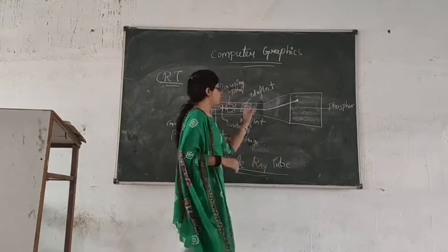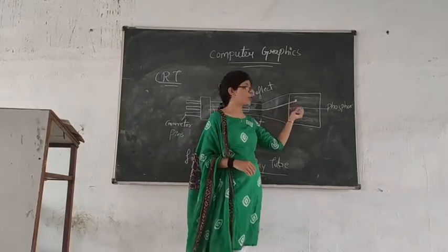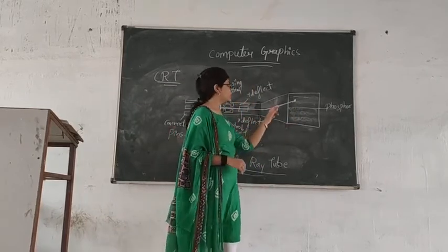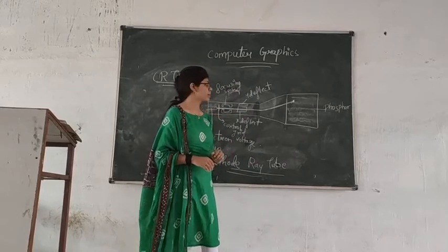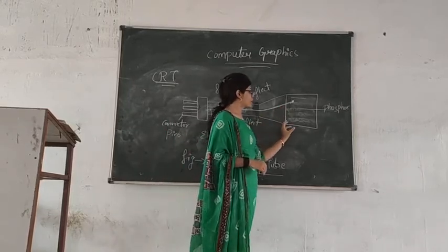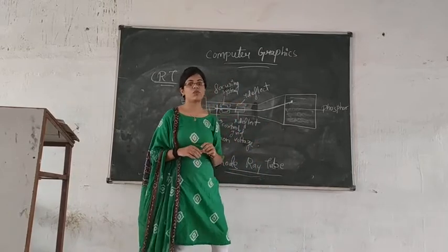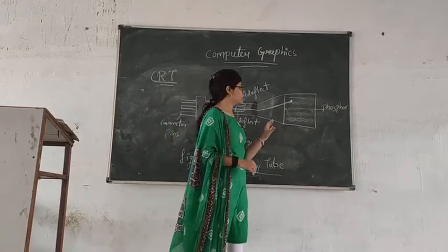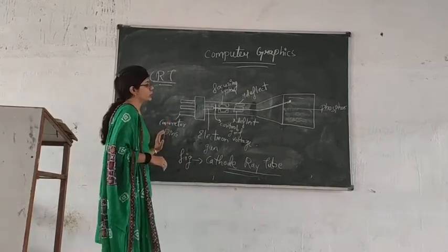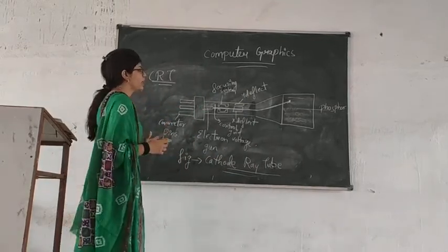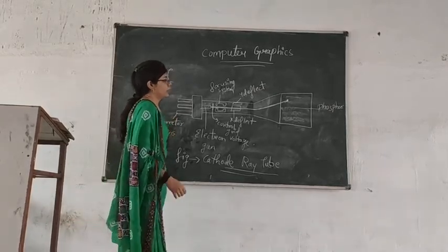On the screen there is a phosphorous coating. When the electron hits the screen, there is a small point produced. This smallest visible point is called a pixel. The screen is made up of pixels, and when continuous pixels are formed, the image is formed. The electron is emitted onto the phosphorous plane, which displays the image.